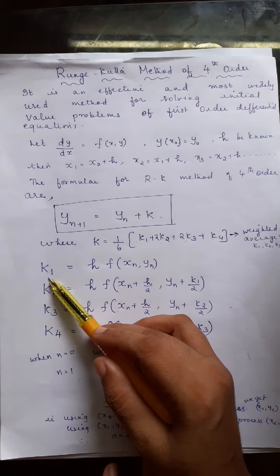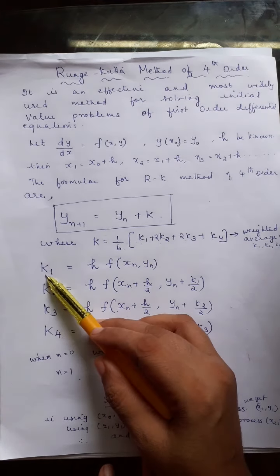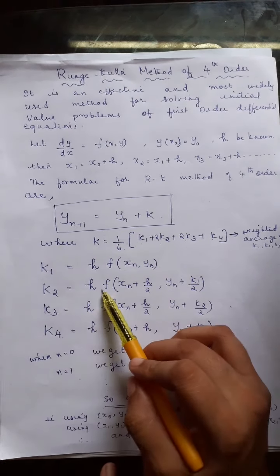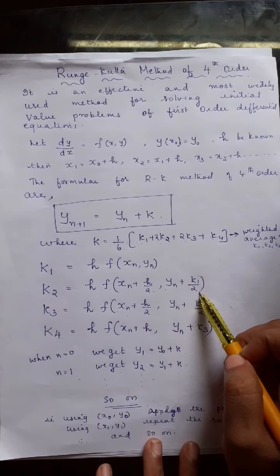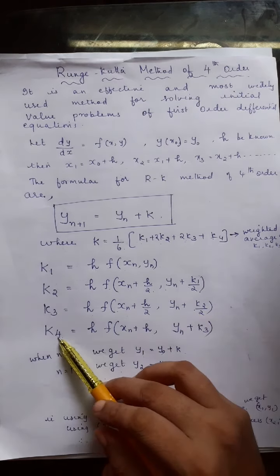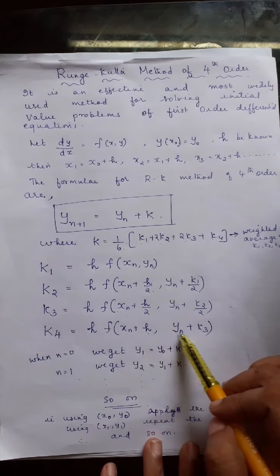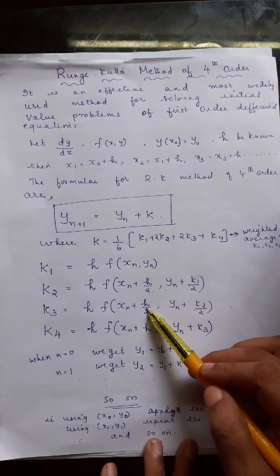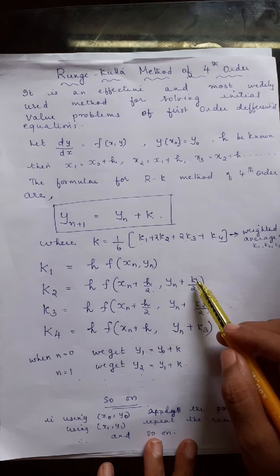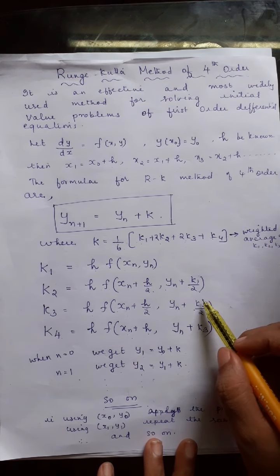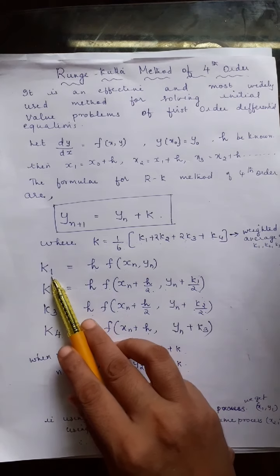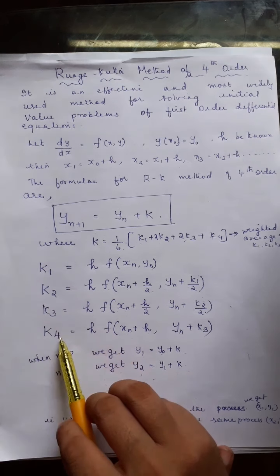The key step is to find the values k1, k2, k3, k4, using which you can find k. k1 = h·f(xn, yn). k2 = h·f(xn + h/2, yn + k1/2). k3 = h·f(xn + h/2, yn + k2/2). k4 = h·f(xn + h, yn + k3). Note that for k2 and k3, half of h is used for the x-coordinate, and the y-coordinate uses k1/2 or k2/2 respectively.